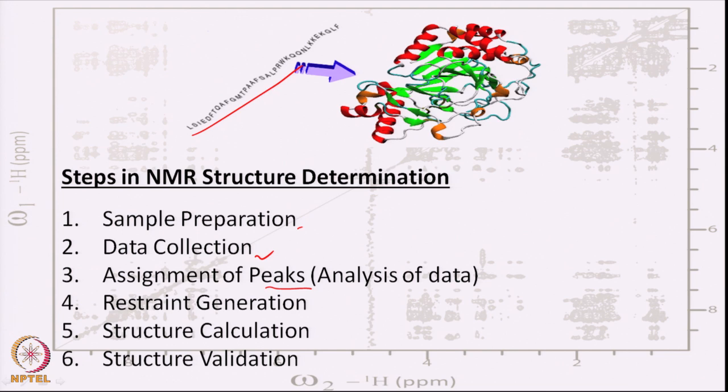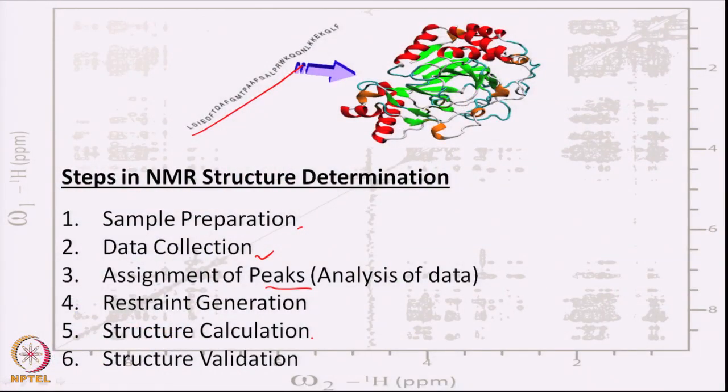After assigning the peaks, we use the NOESY dataset to generate distances — by looking at a NOESY peak you know the distance between two protons, and that is called a restraint. By measuring the intensity of those peaks, one can generate restraints, which are then used in structure calculation. Once the structure is calculated and reasonably good, you validate it — checking that it does not violate any phi and psi torsion angles in the Ramachandran plot.